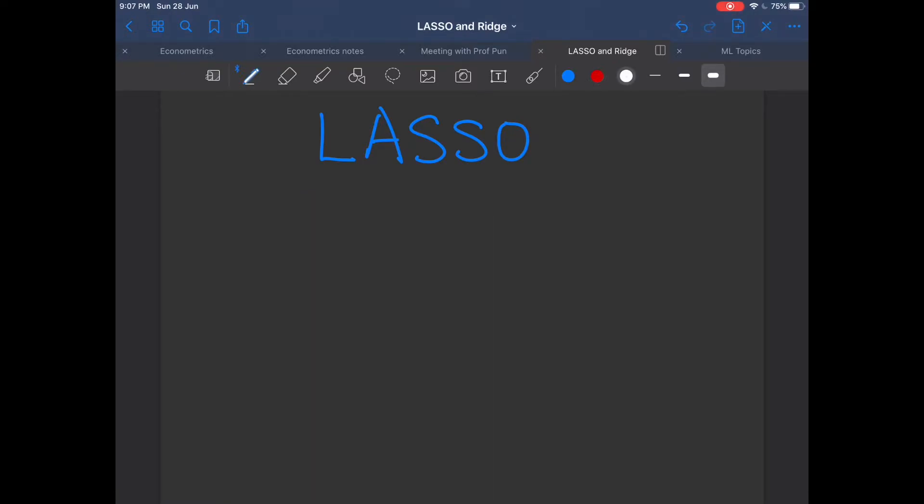Now, let's start from a simple linear model. y is equal to x beta plus e, where e is the error term and e is also unobservable.